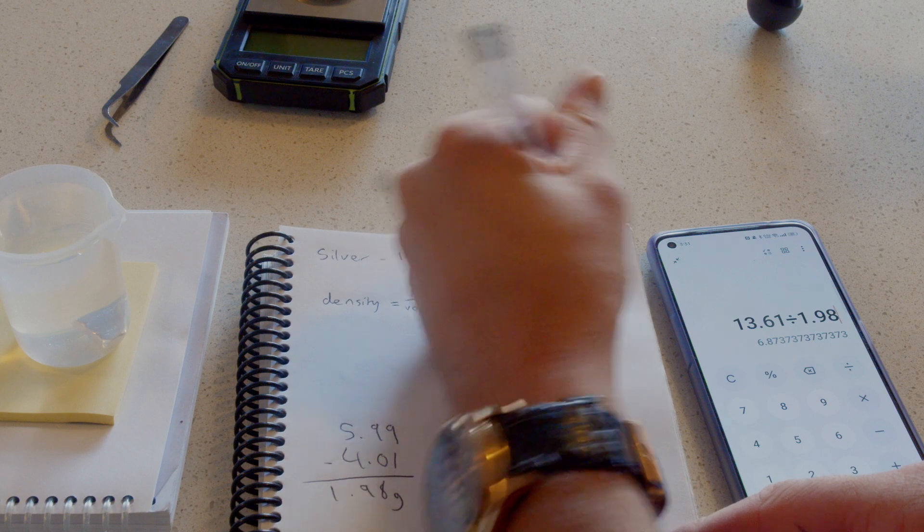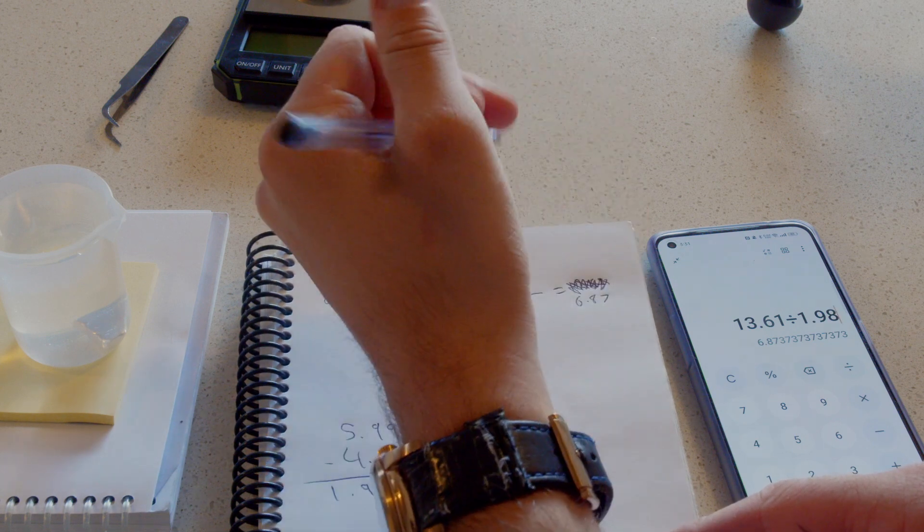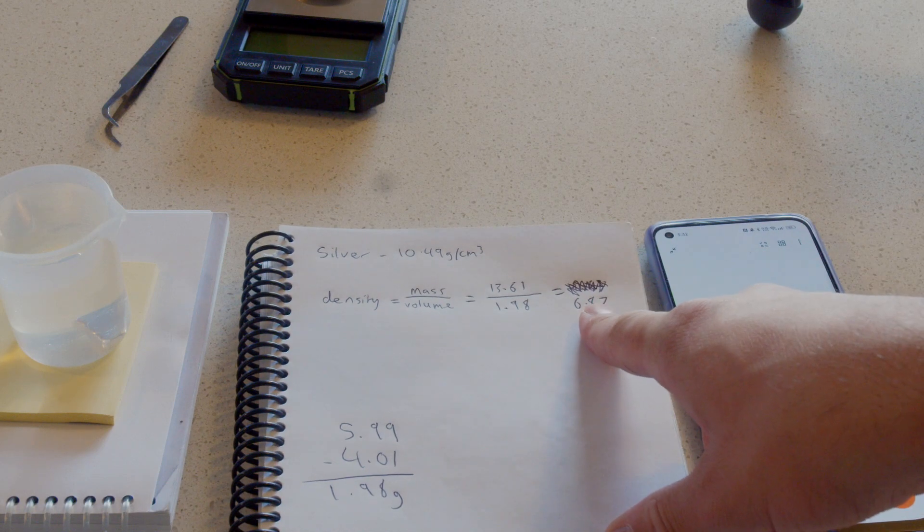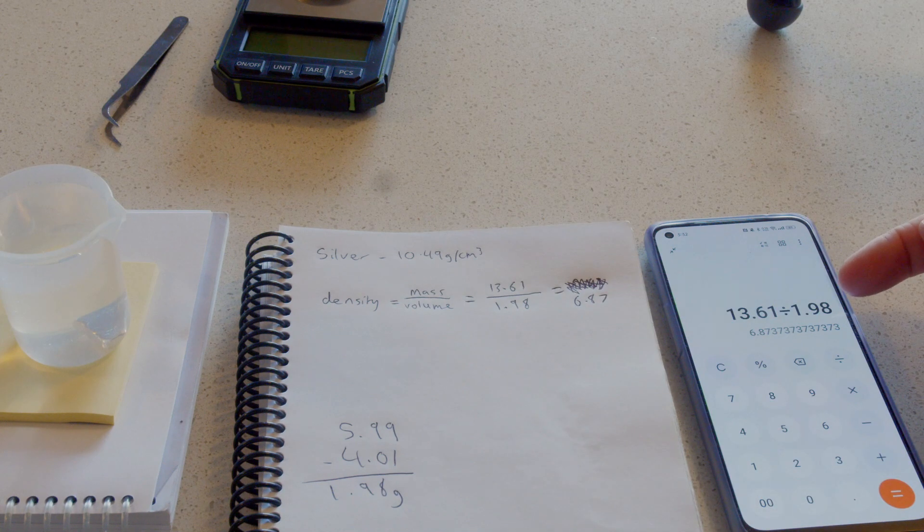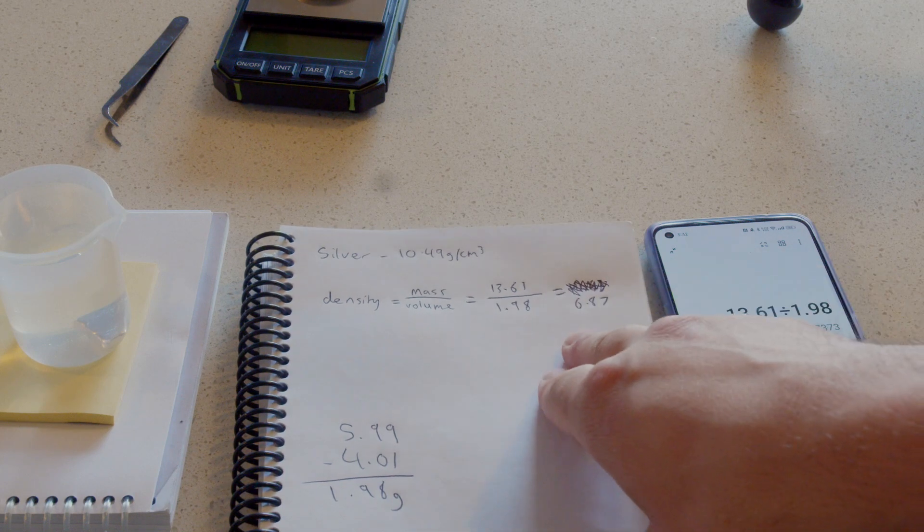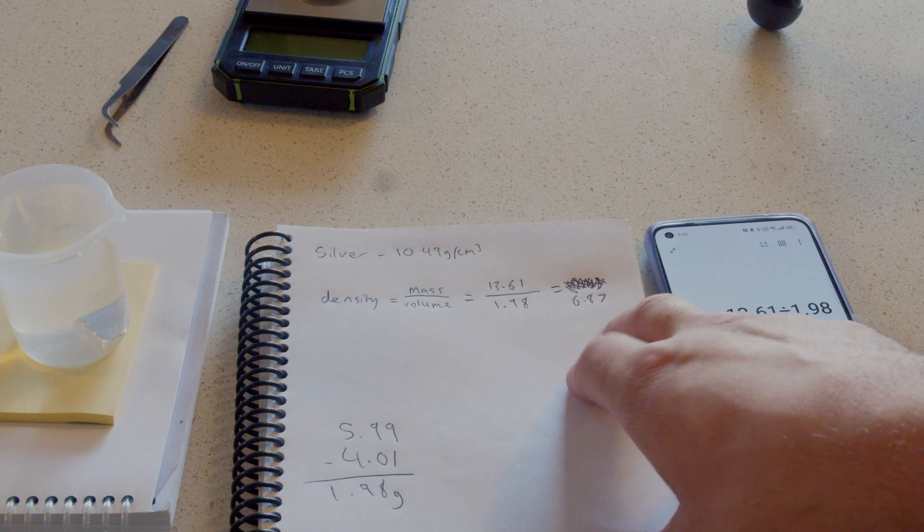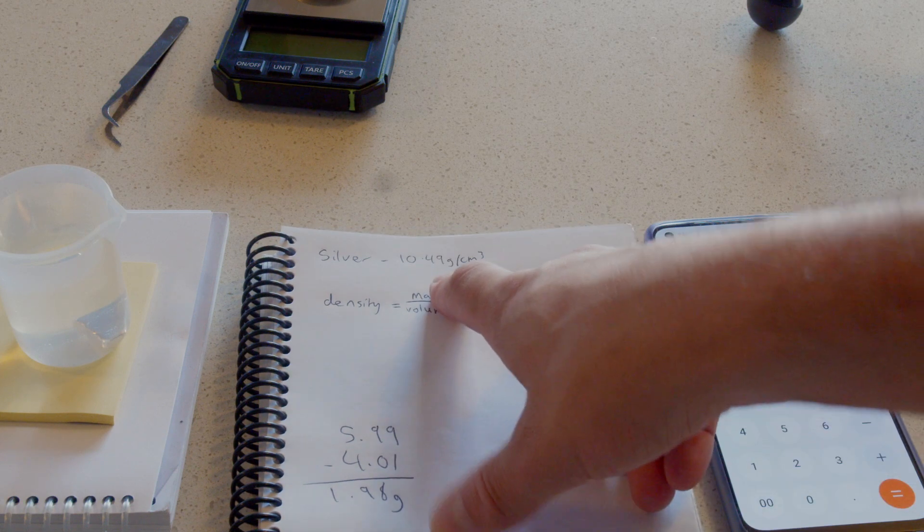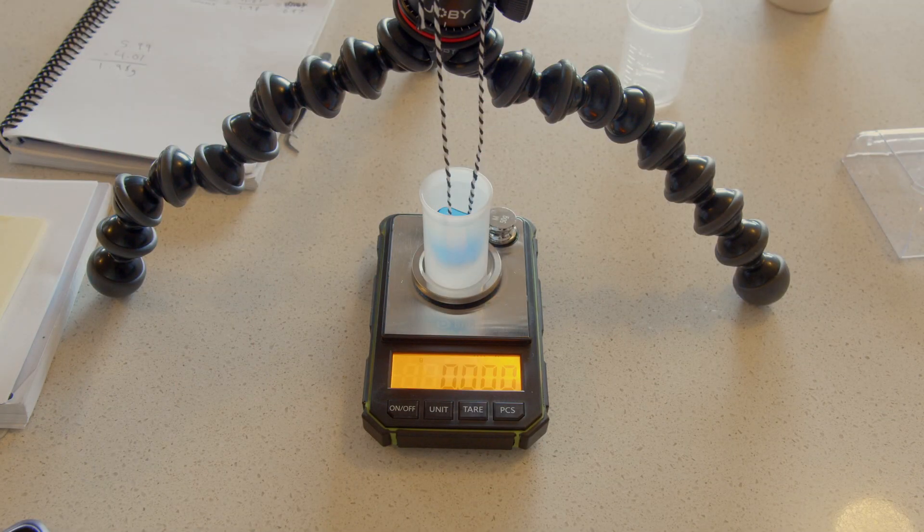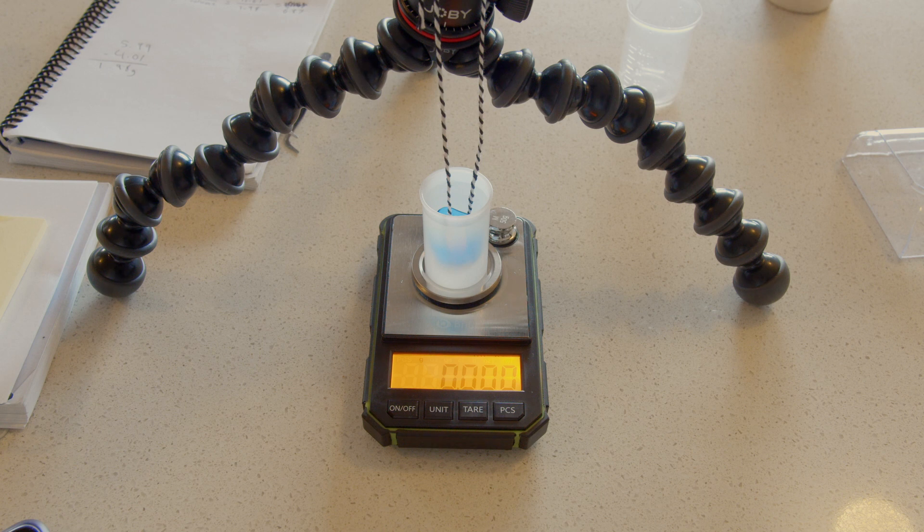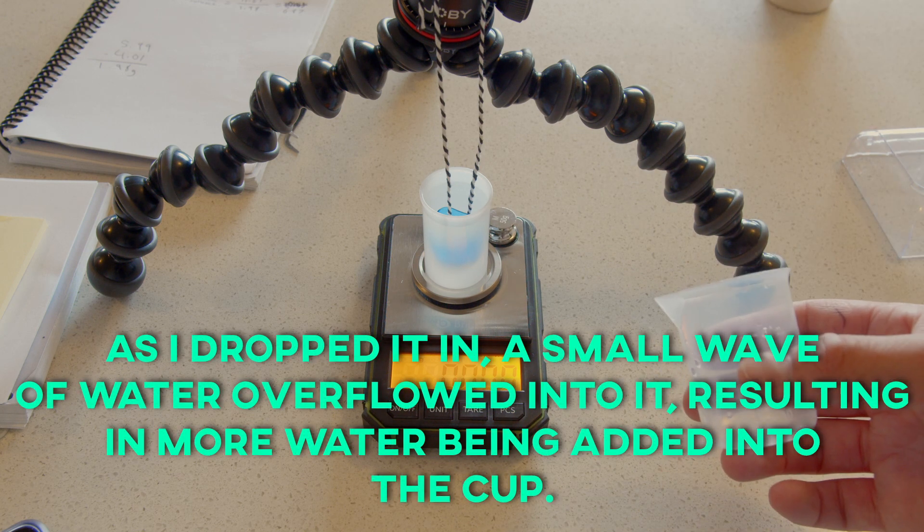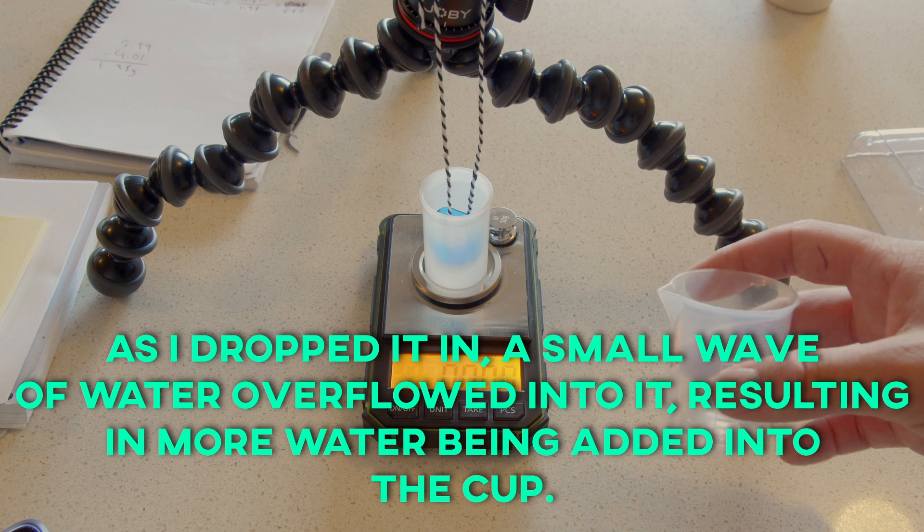So this is actually 6.87. I accidentally hit minus before, but yeah, 13.61 divided by 1.98 equals 6.87 grams per cubic centimeter. That number is much lower than it should be - 10.49. So I got 6.87, which is way off. I'm assuming that's mainly due to how I measured the overflow of water. But I wouldn't imagine it to be that far off.